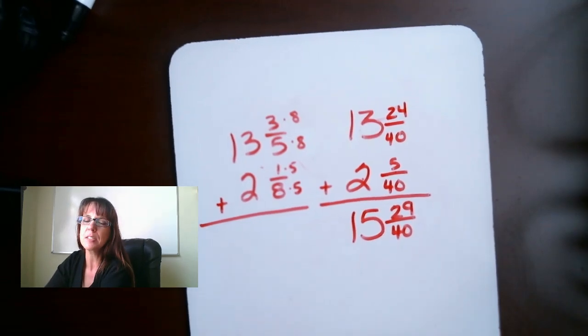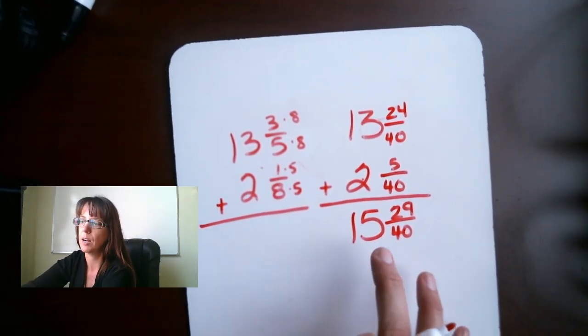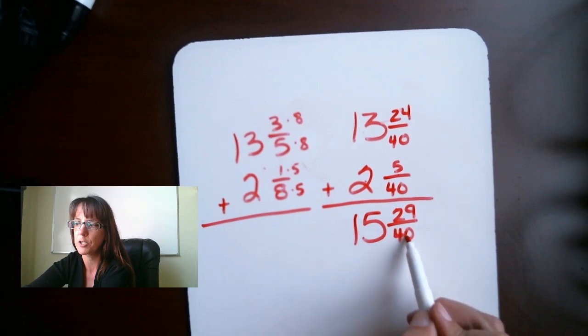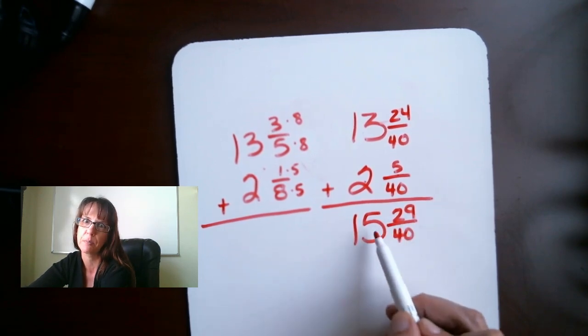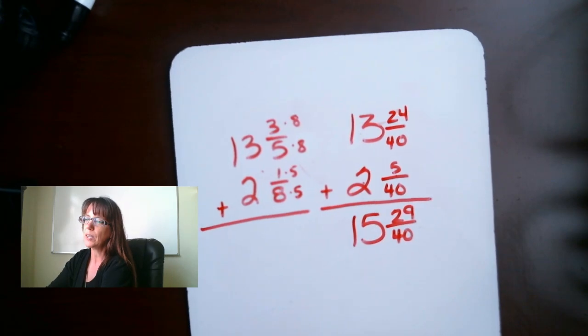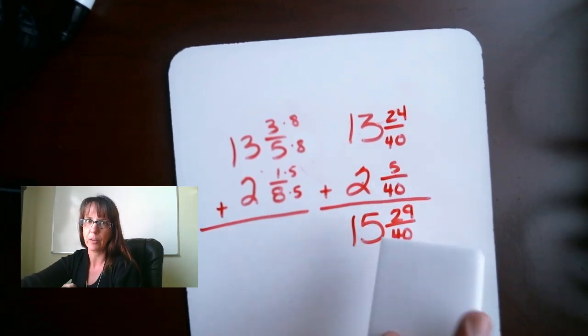So, there's some other things that we're going to need to learn with that when we, because sometimes we'll get an improper fraction over here and then we've got to deal with that with our whole number. So, let's practice some more of those, doing it this method, all right?